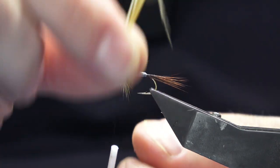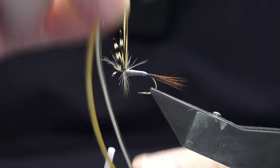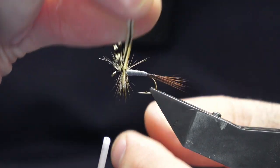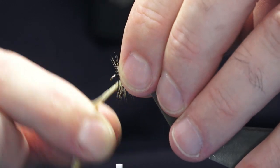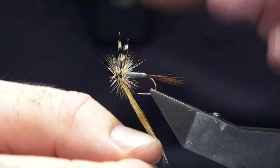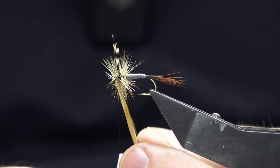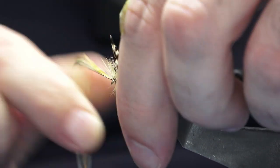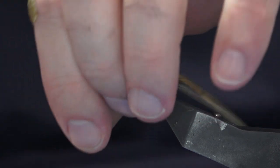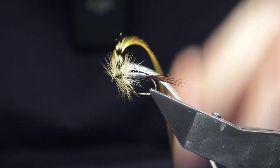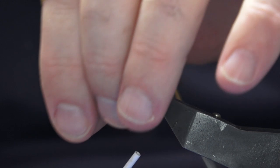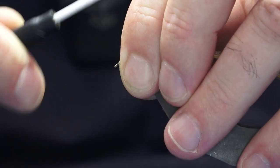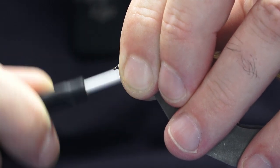Then we're going to come around with our hackles. I do like to try and get at least two or three turns at the back and then two or three at the front. Tie this down with my thread - one turn is enough to hold it. Just come in, bring back the fibers, and then build up a nice small neat head.